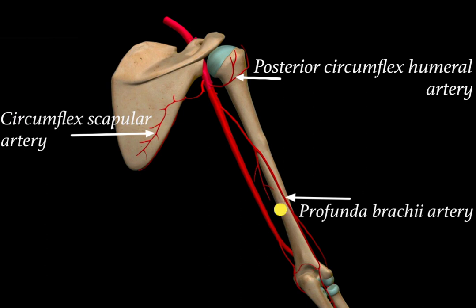Profunda brachii artery is present where the lower triangular space lies, therefore profunda brachii artery is the content of the lower triangular space. To summarize: posterior circumflex humeral artery is the content of the quadrangular space, and circumflex scapular artery is the content of the upper triangular space.